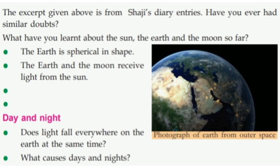The moon revolves around the earth. The earth takes 24 hours to rotate about its own axis.